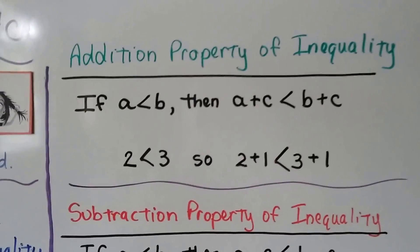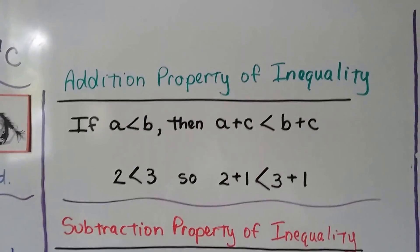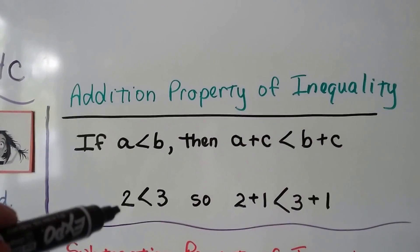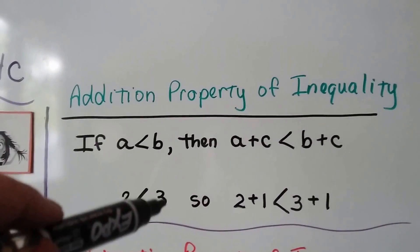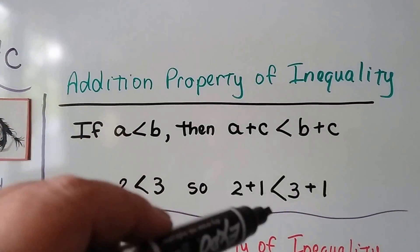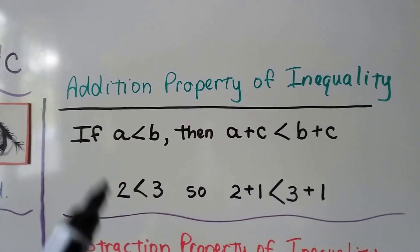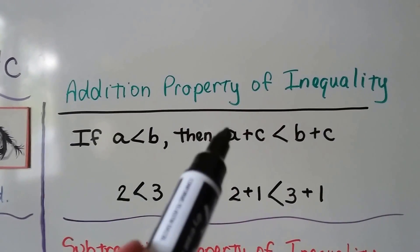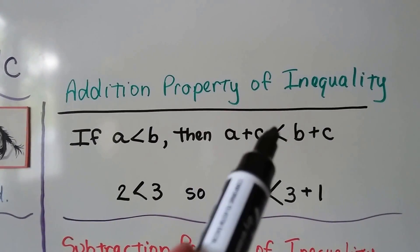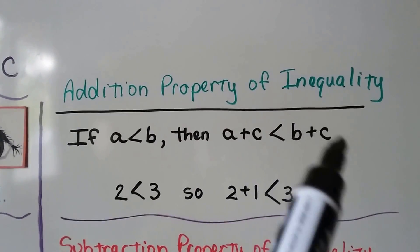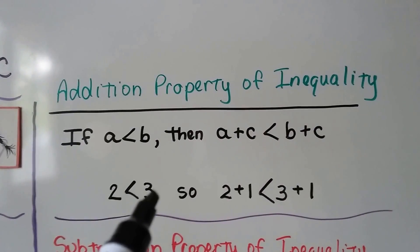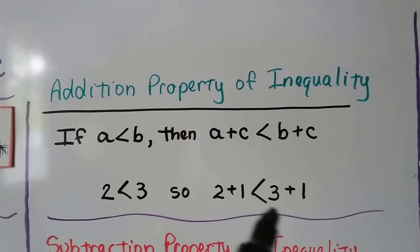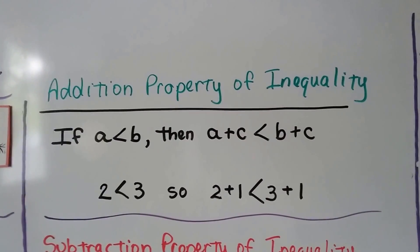The addition property of inequality: with a = 2, b = 3, and c = 1, if a is less than b, then a + c is less than b + c. So 2 is less than 3, so 2 + 1 is less than 3 + 1.